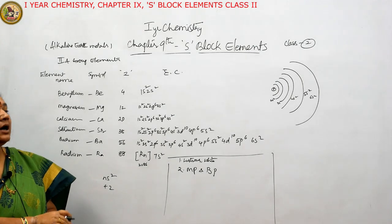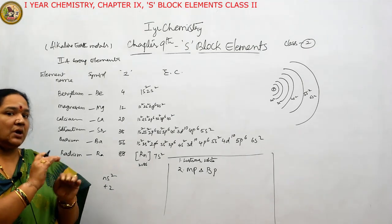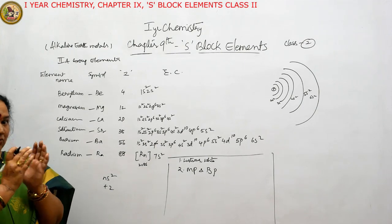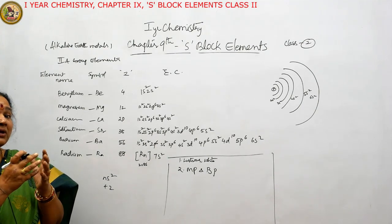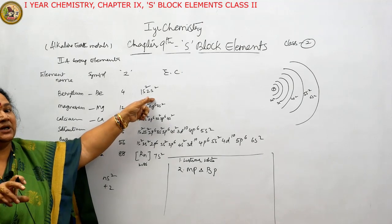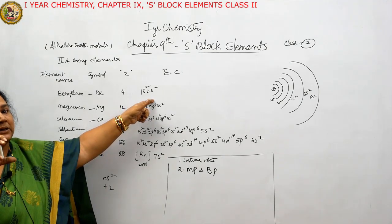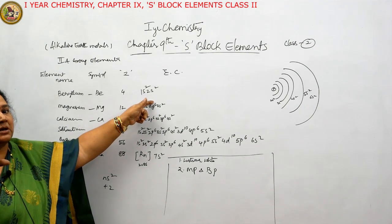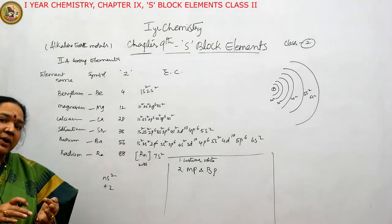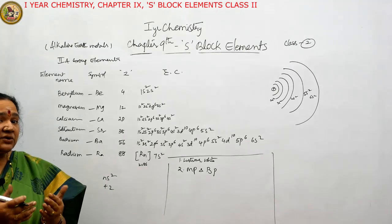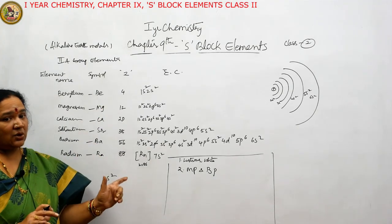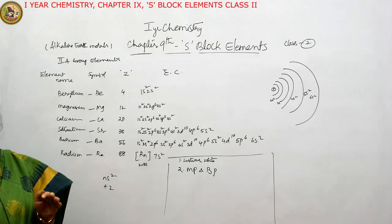Their MPs and BPs are somewhat higher than first group elements because of their tightly bound electrons. Since these two electrons in the outermost orbit are tightly bound, it is very difficult to remove those two electrons. That's why their melting points and boiling points are a little higher compared to first group elements.